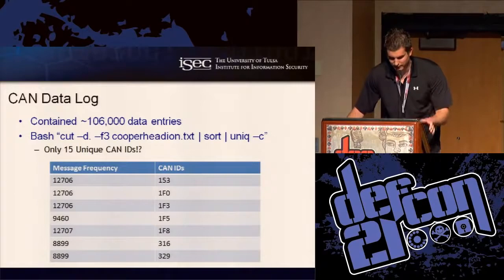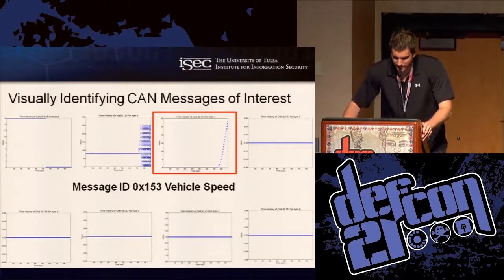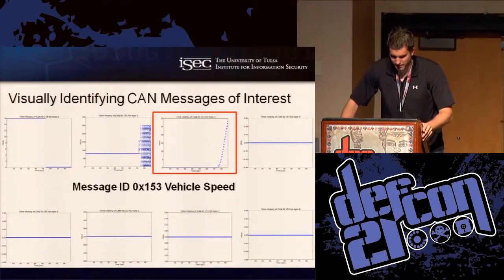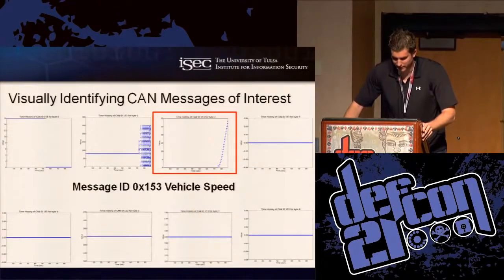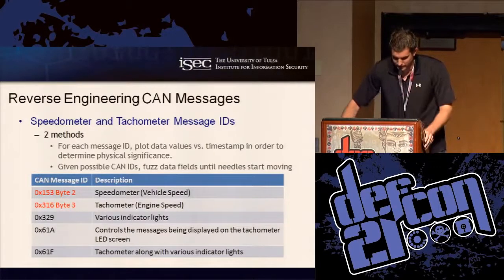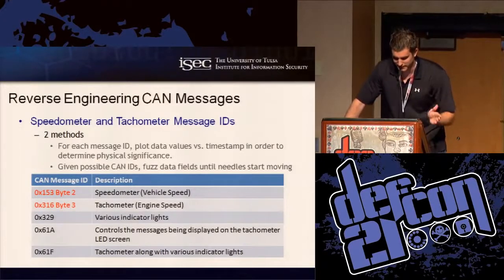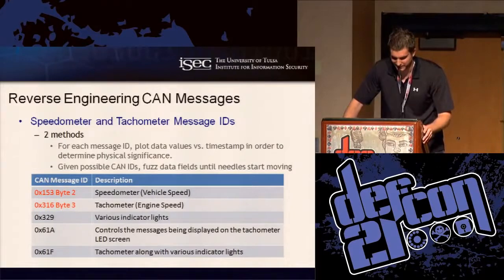Using the method of visually identifying CAN messages of interest by plotting data on a graph: if we're interested in vehicle speed, we'd play with suspect message IDs and plot each byte offset in the payload until we saw something indicative of vehicle speed. For the tachometer, since both cars in the collision video were being pulled together with a pulley system, the engine speed was at idle the entire time. So we used simple fuzzing techniques on the data fields of suspect message IDs until the tachometer started flipping out of control and the needle started spinning like crazy.